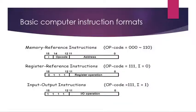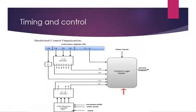So the timing and control: control unit is of two types - hardwired control and microprogrammed control. Here we can see the timing and control of hardwired control organization. It has an instruction register.